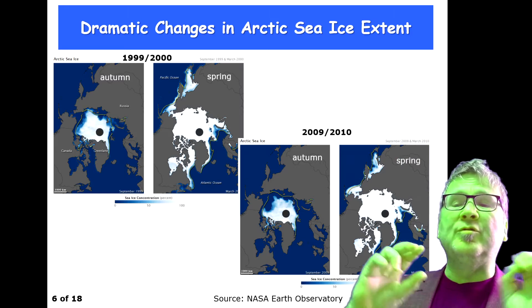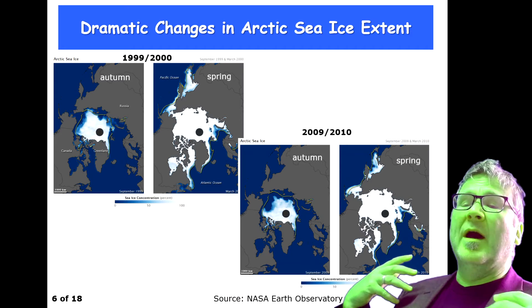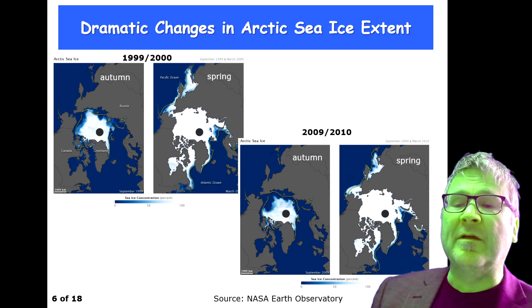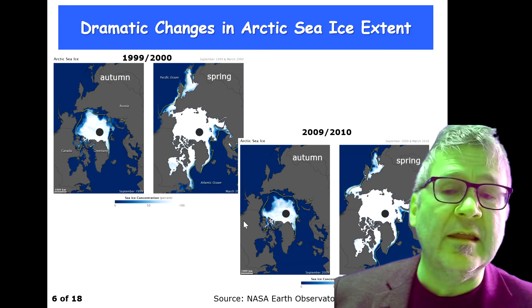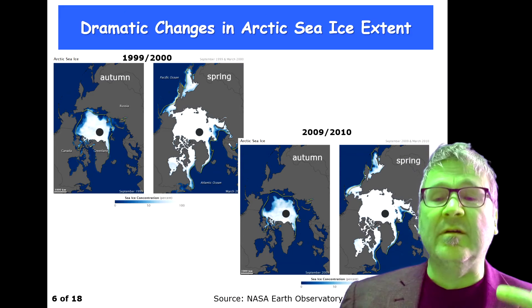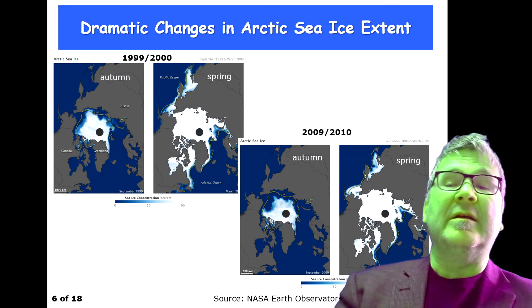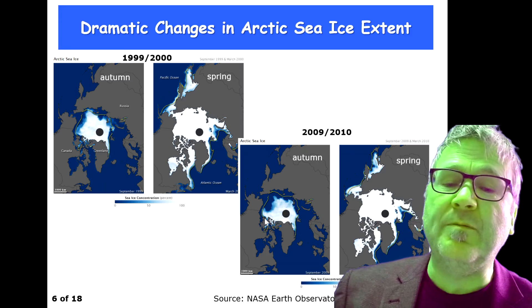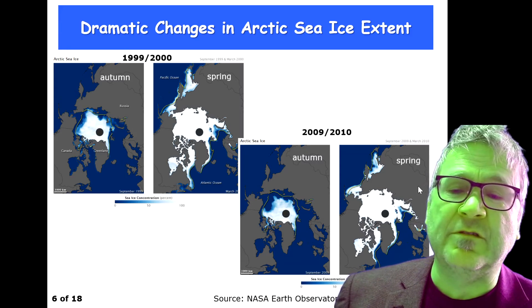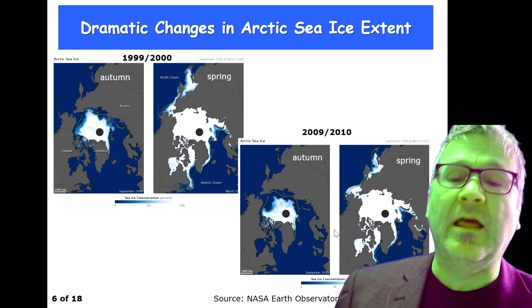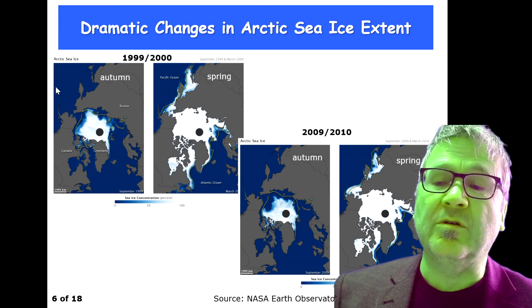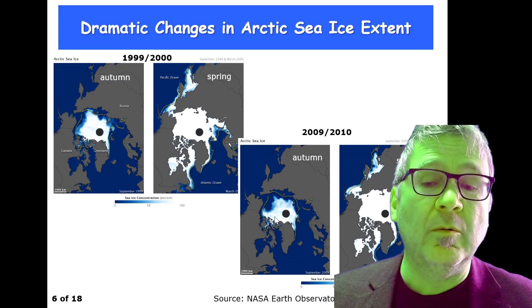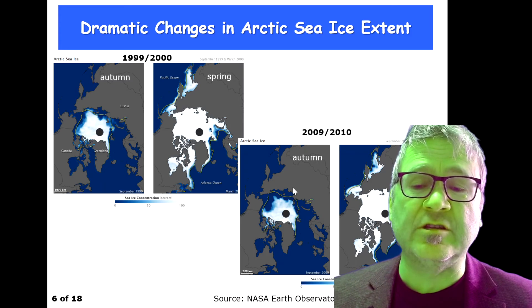What's shown here are two different time periods. The top left shows the extent in 1999 and 2000, where you can see the seasonal extent — autumn and spring giving the minimum and maximum. Then one image from 10 years later, 2009 to 2010. Flipping from left to right, the spring extent doesn't show much change, but the autumn coverage shows a significant reduction in the northern and western part.